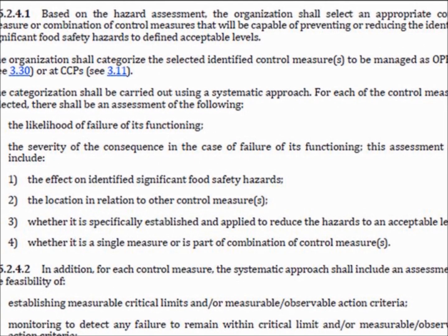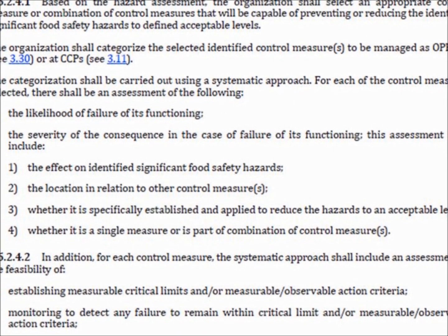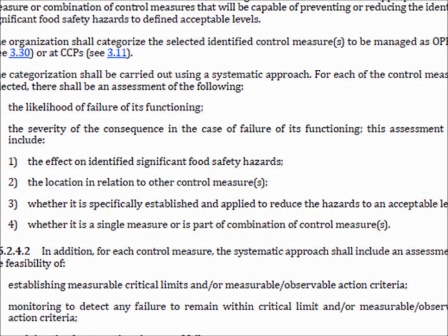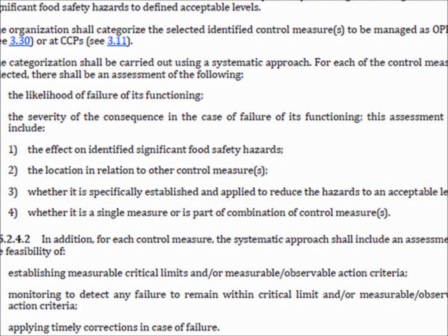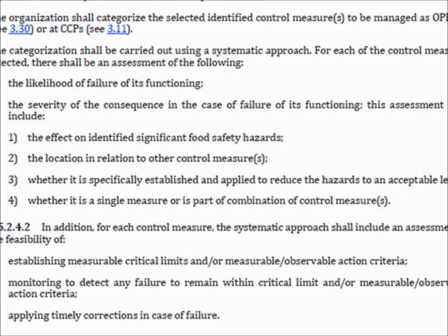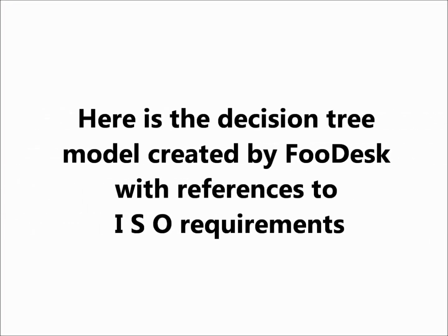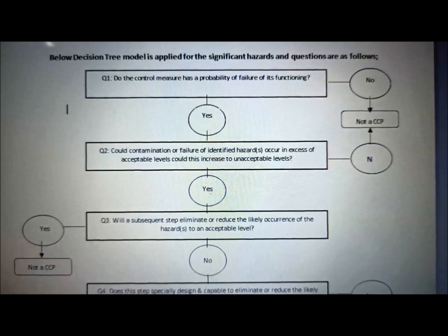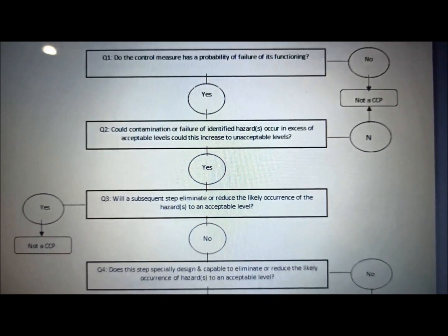Here is what ISO 22000:2018 explains about selection and categorization of control measures. Source: ISO 22000:2018 Food Safety Management Systems — Requirements for any organization in the food chain. Here is the decision tree model created by Food Desk with references to ISO requirements, so you can try this decision tree for ISO 22000:2018.